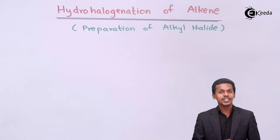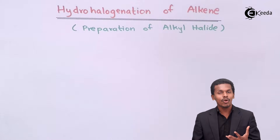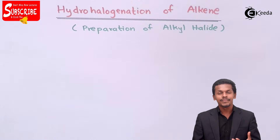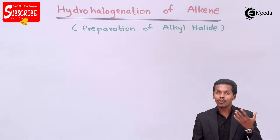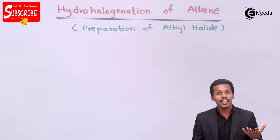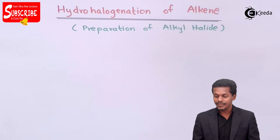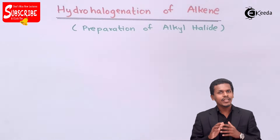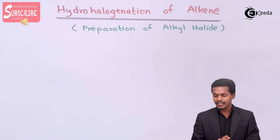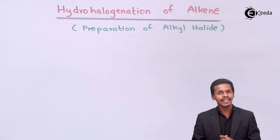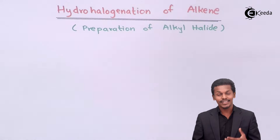Talking about the hydrohalogenation process, it is nothing but the addition of the hydrogen halide across the carbon-carbon double bond, that is an alkene. So let me give you some information regarding this one so that we could understand it in a nice way.